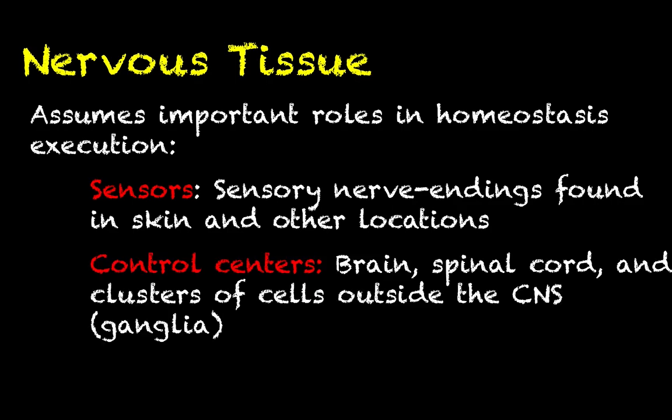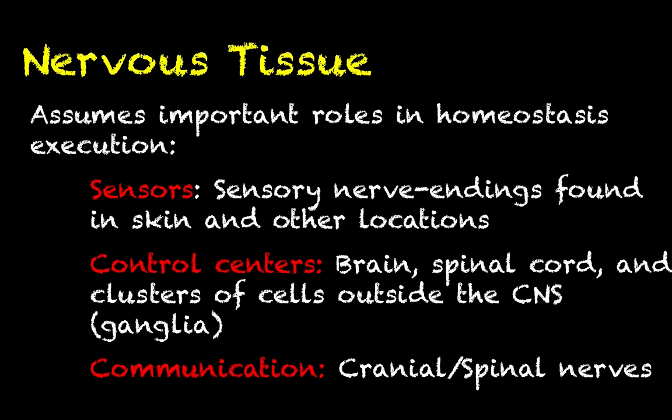Clearly, nervous tissue is going to play an important role in control centers — big collections of neurons that are found in the brain, the spinal cord, and then in the ganglia that are outside the central nervous system. These control centers are going to be receiving sensory information and then outputting efferent signals to orchestrate responses from other effector cells throughout the body to achieve homeostasis.